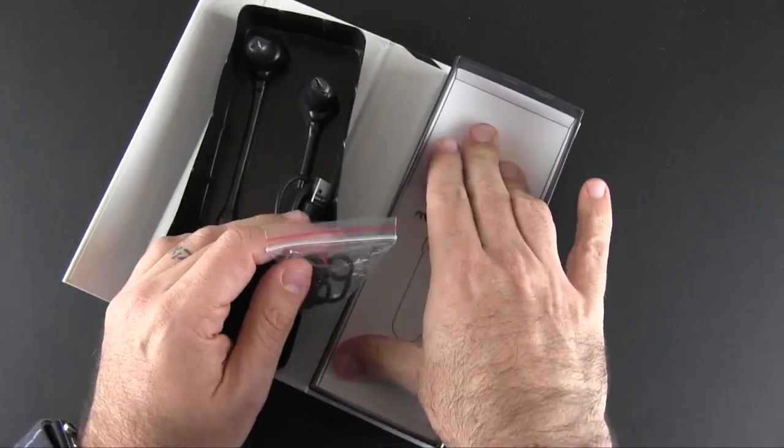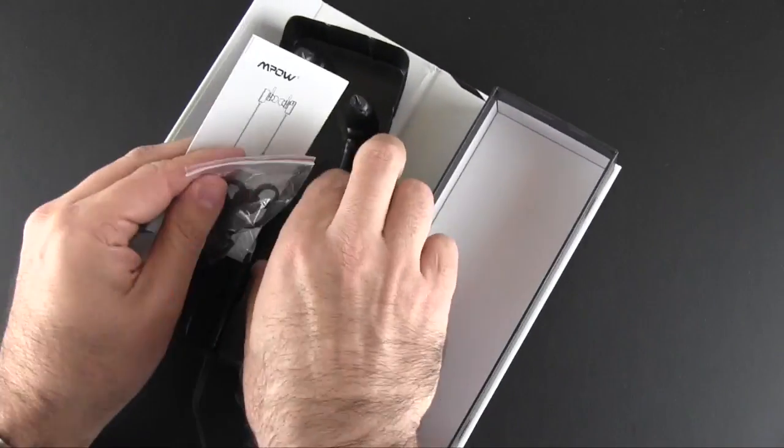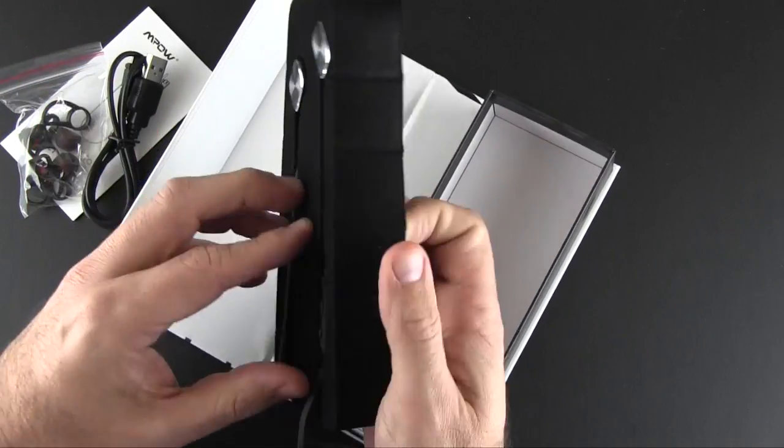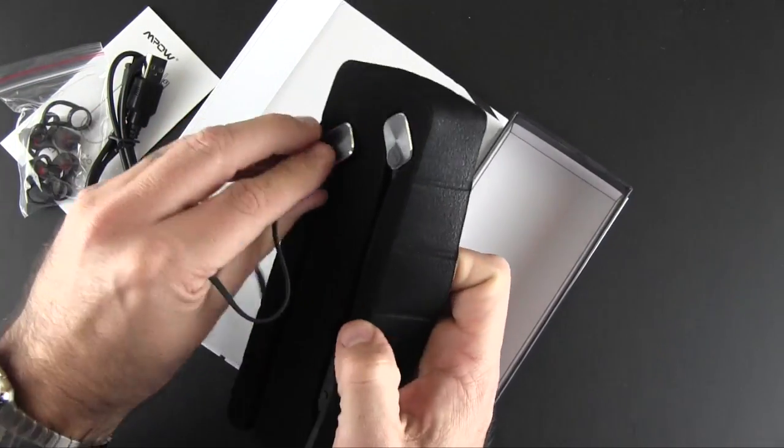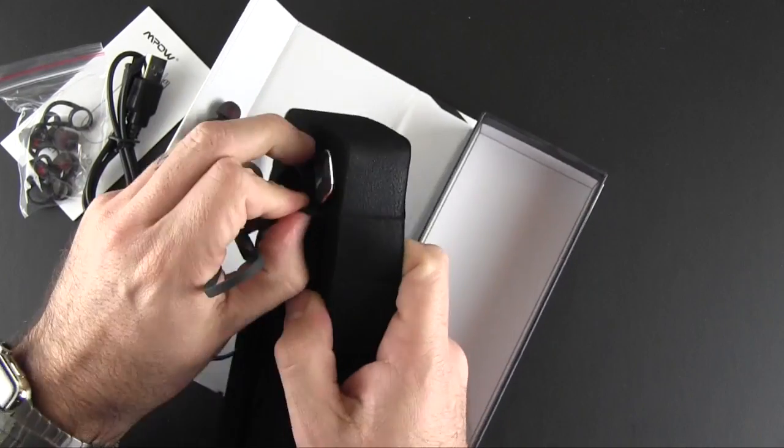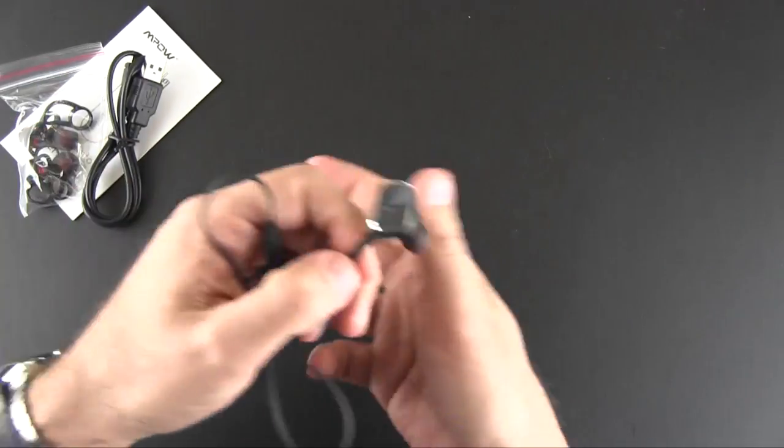So inside here, you're going to get a couple different things. I'm going to pull the manual out, charger, and then of course the headphones. We'll get all the packaging out of the way, and then show you them up close right now. Let's get the box out of the way.